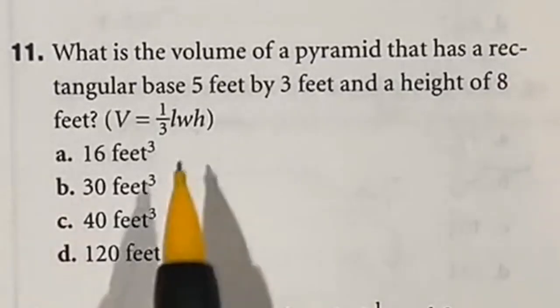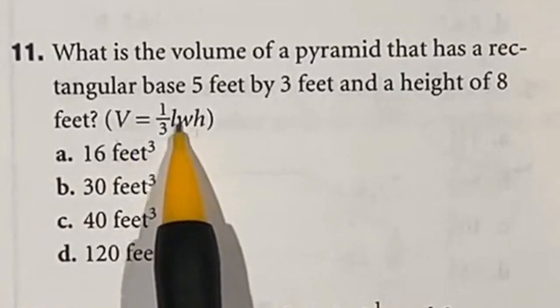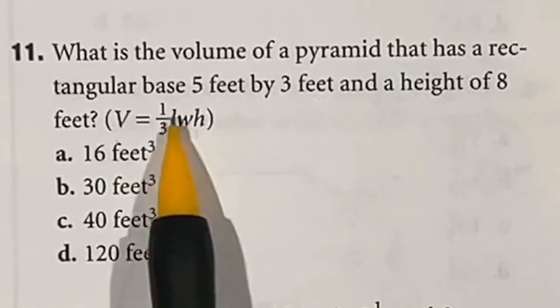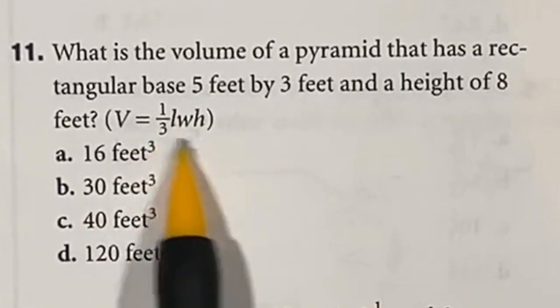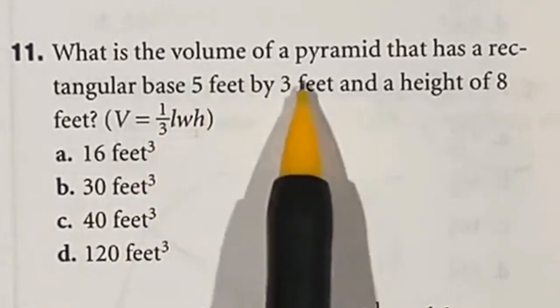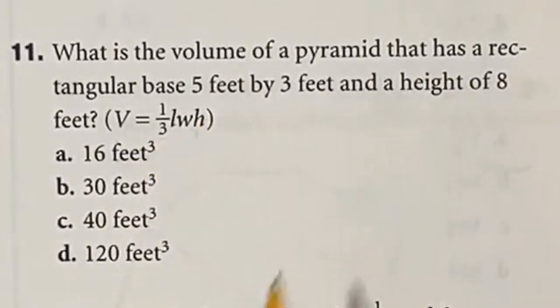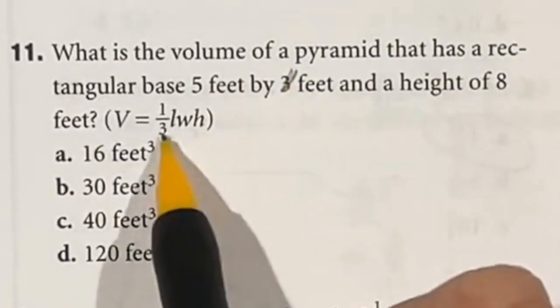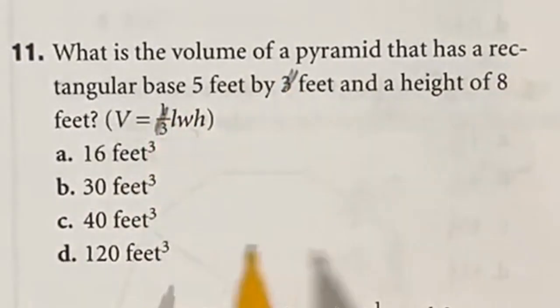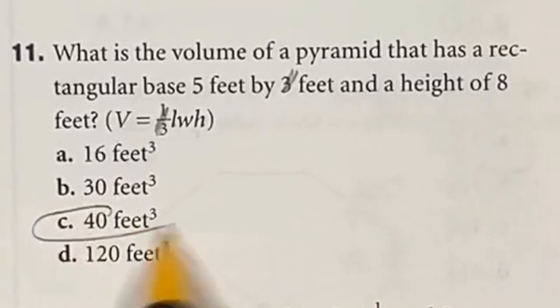Number 11 we have to find the volume of a pyramid but it gives you the formula right here. You need to do length times width times height and then multiply that by one over three or divide by three either way. They give you the length, width, and height: five, three, and eight. Instead of multiplying these three together and then dividing by three, I'm going to recognize that there's a three and then dividing by three so I can cancel those out. So our final answer should just be five times eight which is 40, answer C.